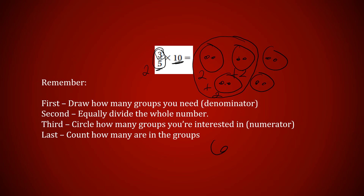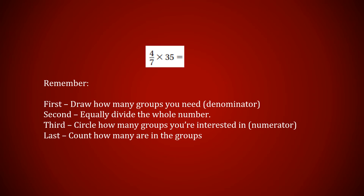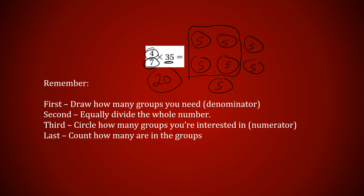How about four-sevenths of 35? I know I have seven groups: one, two, three, four, five, six, seven. I need to divide 35 by those seven groups — 35 divided by 7 is 5. I'm counting four of those groups: one, two, three, four. Five, five, five, five — ten, fifteen, twenty is the answer. The math: 35 divided by 7 equals 5, and 5 times 4 equals 20.